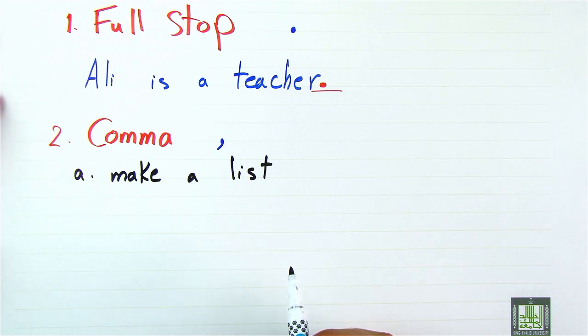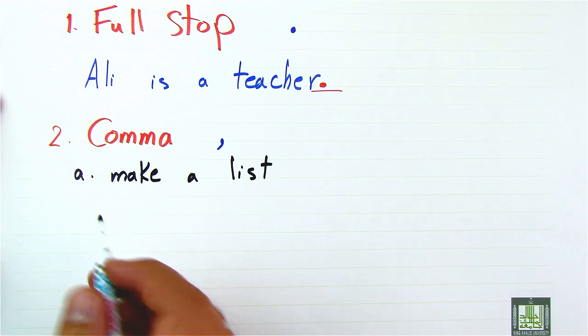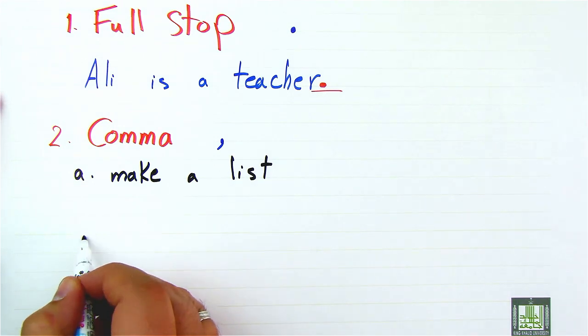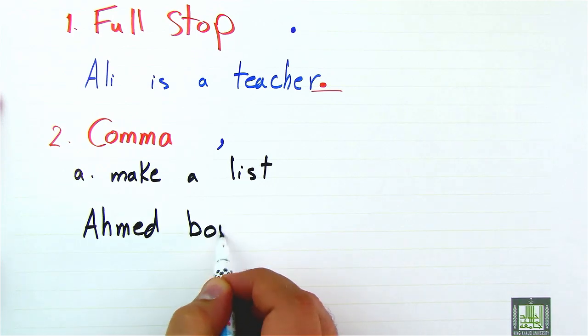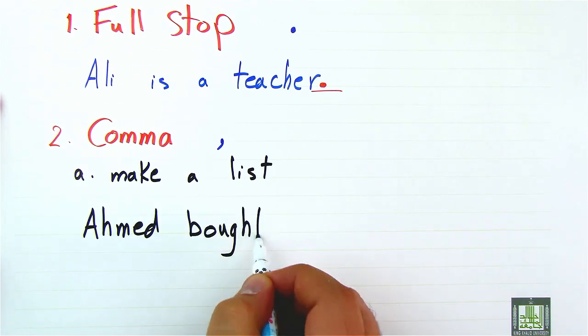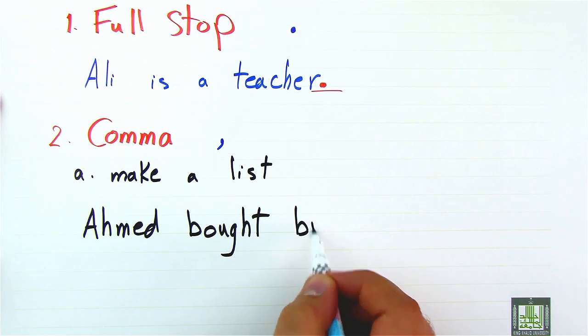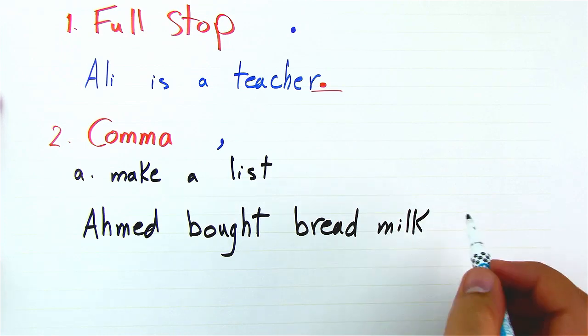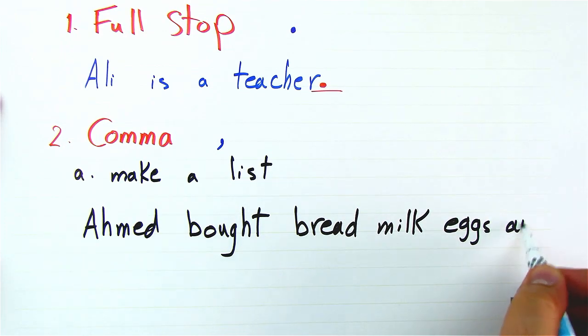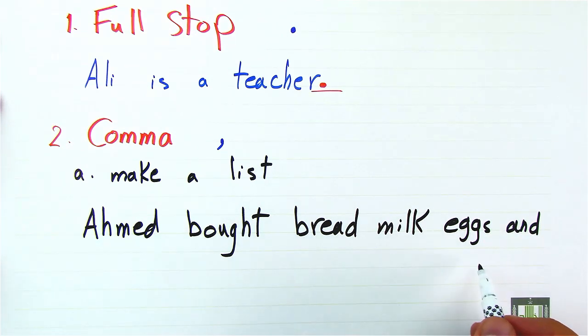For example, if we mention more than two things, then we need to separate them by using a comma. For example, look at this sentence: Ahmed bought bread, milk, eggs, and juice.